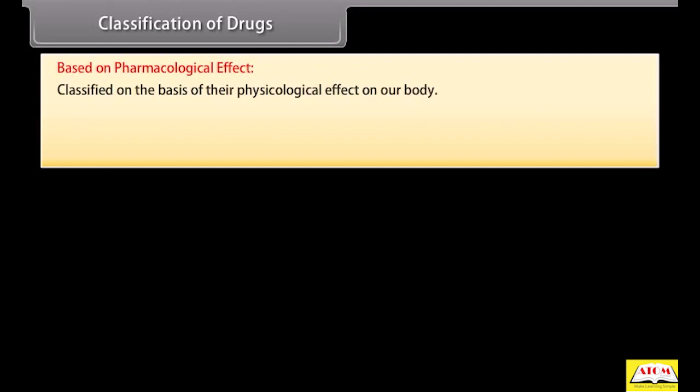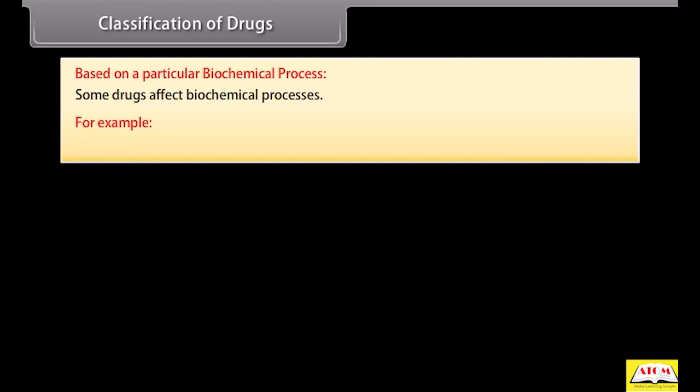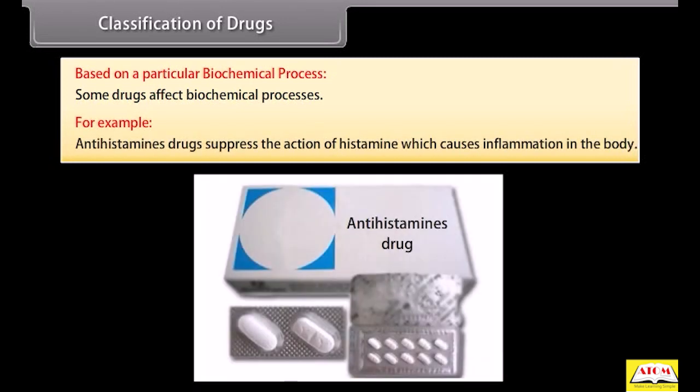Drugs can be classified in several ways. Based on pharmacological effect, drugs are classified on the basis of their physiological effect on our body. For example, antipyretic drugs reduce the temperature of a fevered body, whereas antiseptic drugs prevent the growth of microorganisms. Some drugs also affect biochemical processes — for example, antihistamine drugs suppress the action of histamine, which causes inflammation in the body.